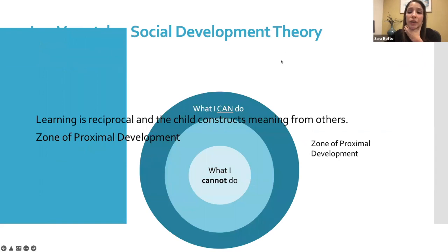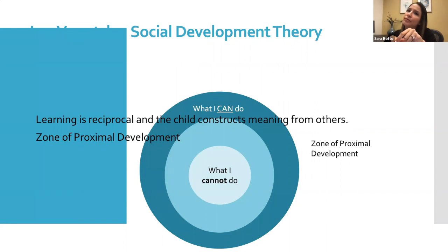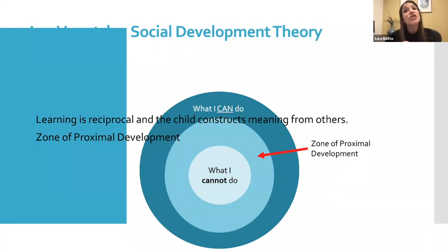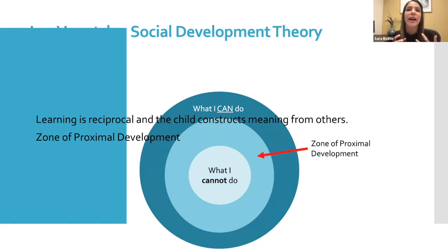Vygotsky is well known for the zone of proximal development — the space between what the child cannot yet do and what they will eventually be able to do. For example, a child who cannot yet tie their shoes is at the 'cannot do' level, but eventually will be able to. In the zone of proximal development, a parent scaffolds the child — helping them learn to tie their shoes by, for example, teaching them the bunny song.